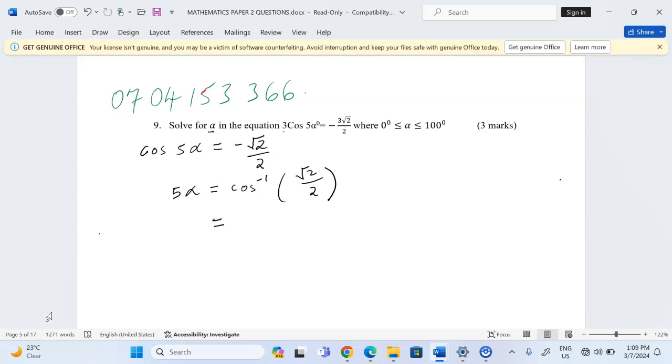So I'm going to take the cosine inverse, shift cosine of √2/2. So this is giving us exactly 45 degrees. 45 degrees.